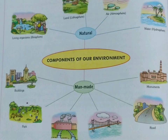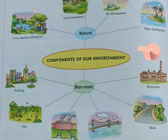Environment is of two types, or you can say it has two components: natural and manmade. In this image, you can see different examples of natural environment and manmade environment.